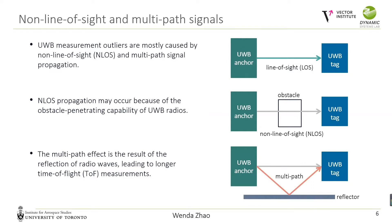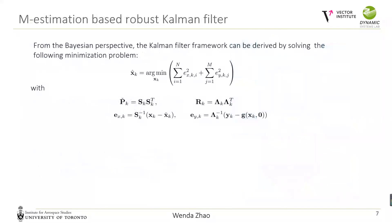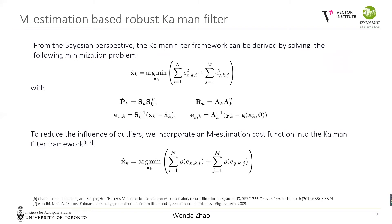The multipath effect is the result of radio wave reflection. Both non-line-of-sight and multipath lead to longer time-of-flight measurements. In indoor scenarios, metal structures, walls, and obstacles often cause non-line-of-sight and multipath propagation, leading to large measurement outliers. To achieve reliable localization, we applied a lightweight robust Kalman filter to reduce the influence of measurement outliers. From the Bayesian maximum-a-posteriori perspective, we replaced the least-squares cost function with an M-estimation cost function and derived a recursive M-estimation-based Kalman filter.